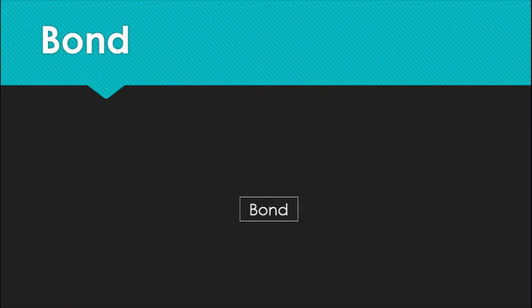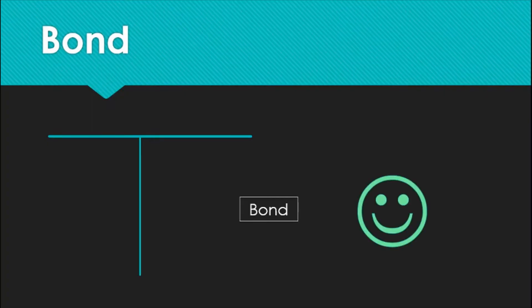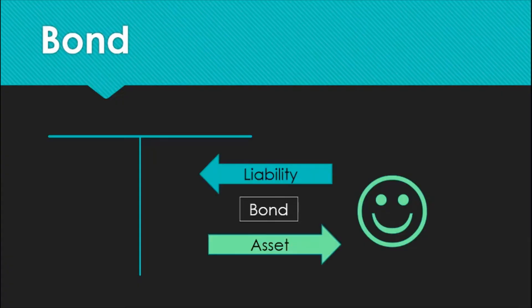To understand what a bond is, we have to look at things from the perspective of the issuing company as well as the investor. From the point of view of the company issuing the bond, this is a liability, while from the point of view of the investor, this is an asset. So a bond is both a liability and an asset depending on whose point of view we are talking about.